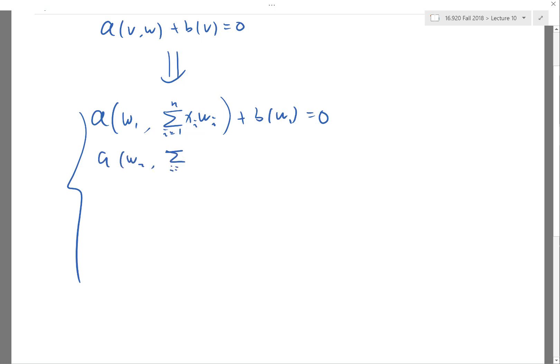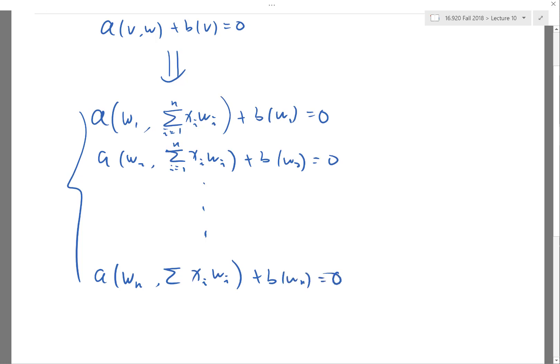And so on, up to A(WN, summation of Xi*Wi) plus B(WN) equals 0.